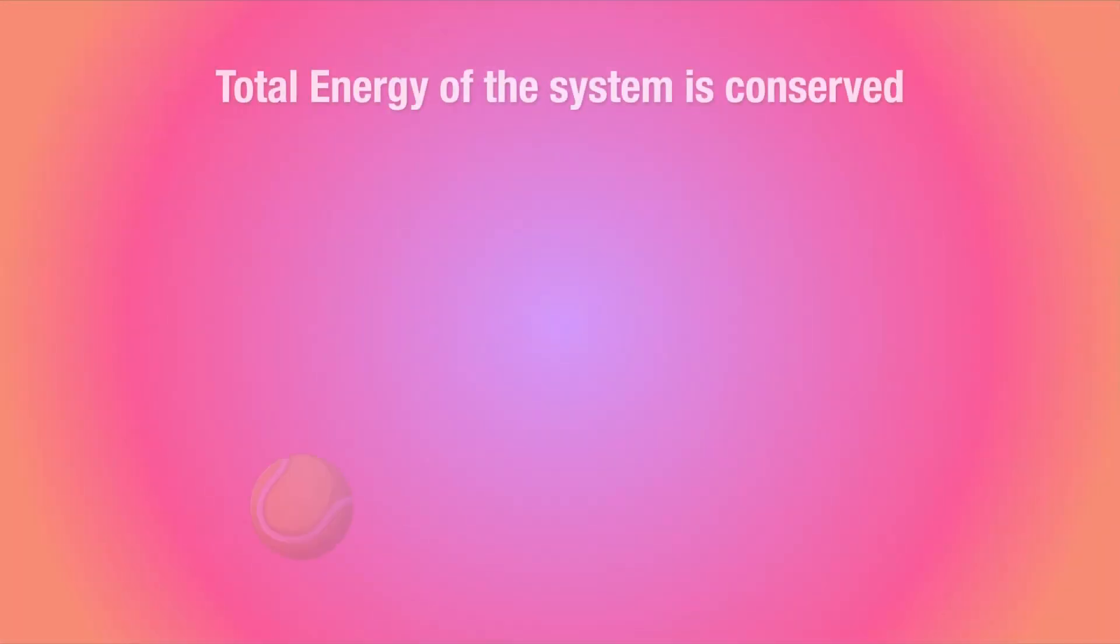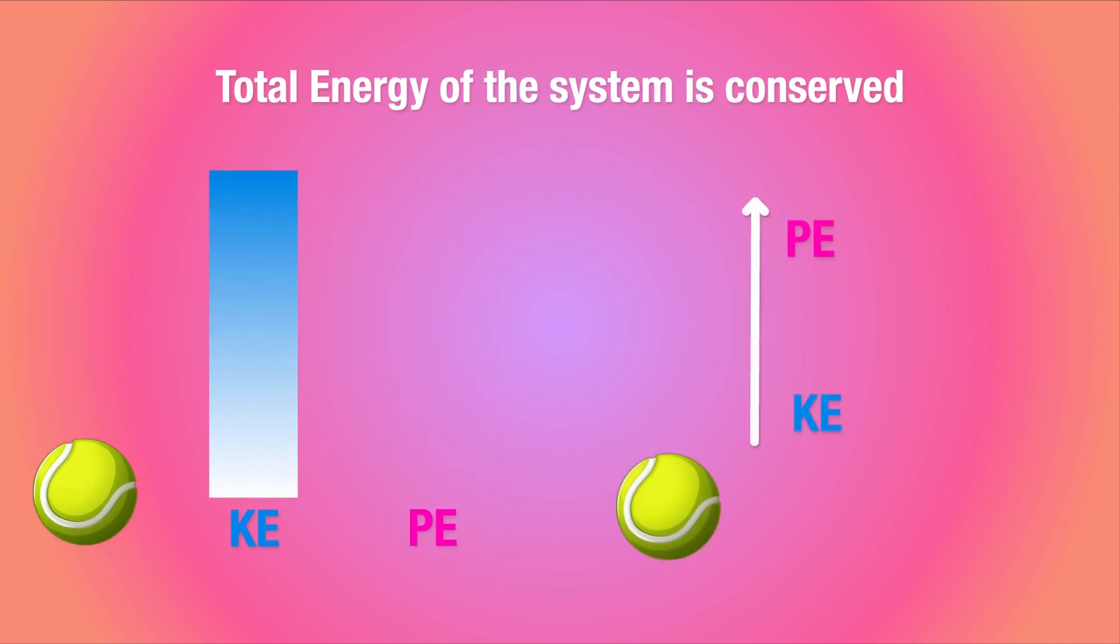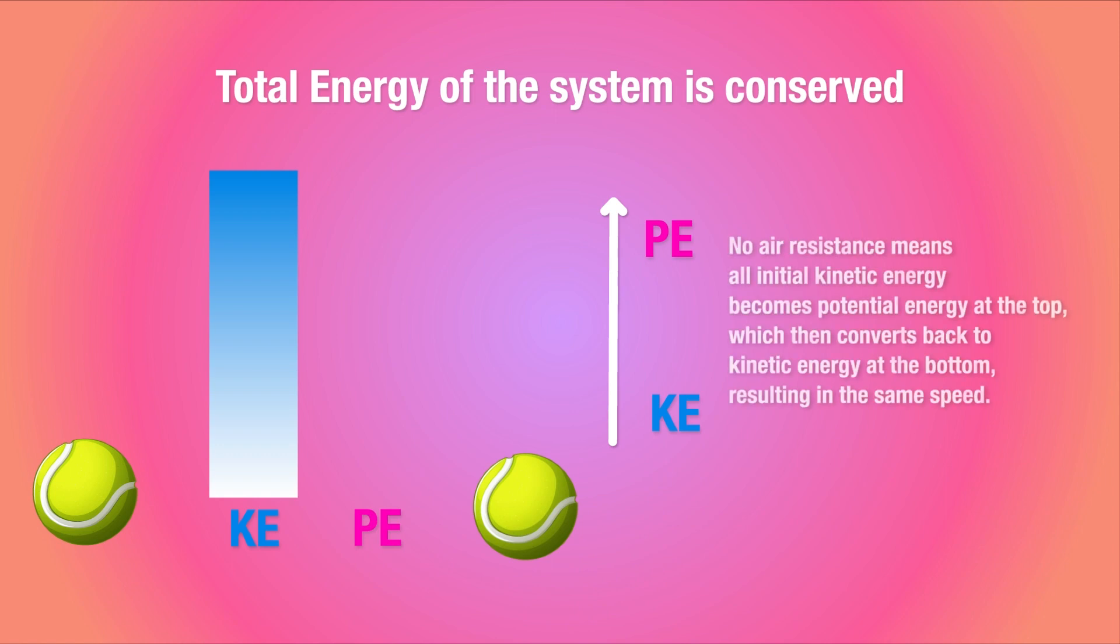You'll see that the final velocity as the ball hits the ground is the same as it was when the ball was released initially. That makes sense, because we know that the total energy of the system must be conserved. That is, the amount of kinetic energy that the ball has at the start will convert to potential energy as it goes up. At the peak of the journey, all the kinetic energy will have converted to potential energy.